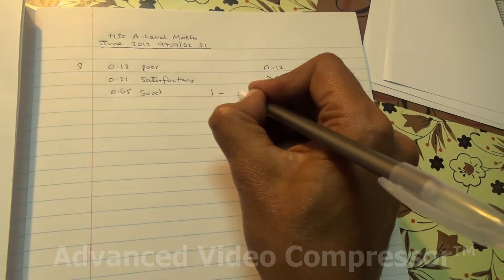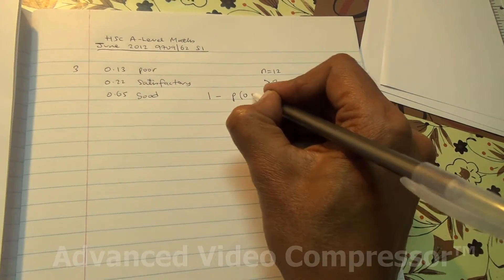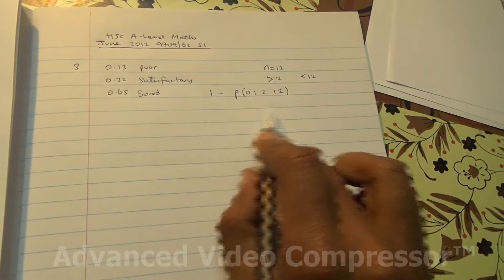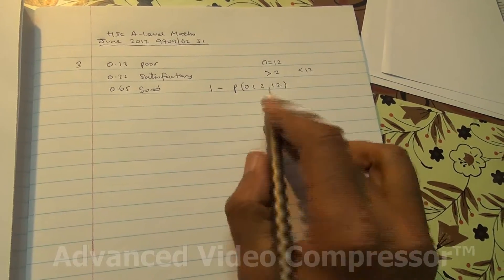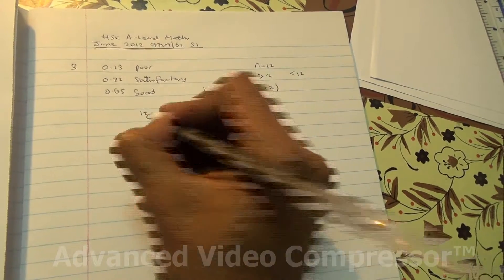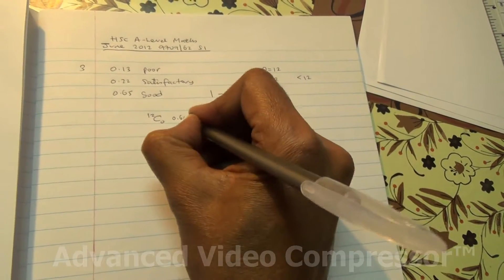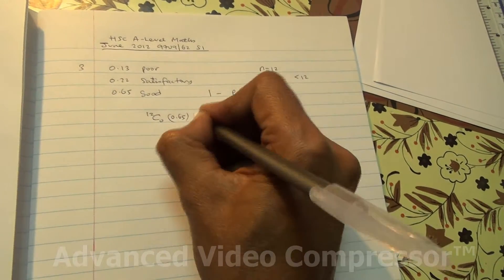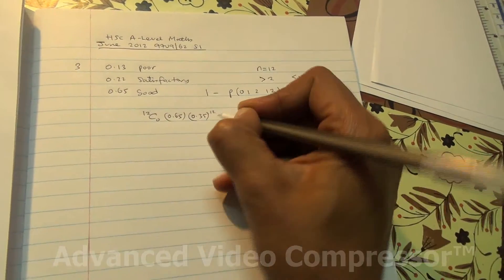I'm going to take 1 minus the probability of 0, 1, 2, and 12. So we're going to be computing the binomial distribution for this. 0 would mean 12C0, rated the food as good, times 0.35, rating it as not good, to the power of 12,